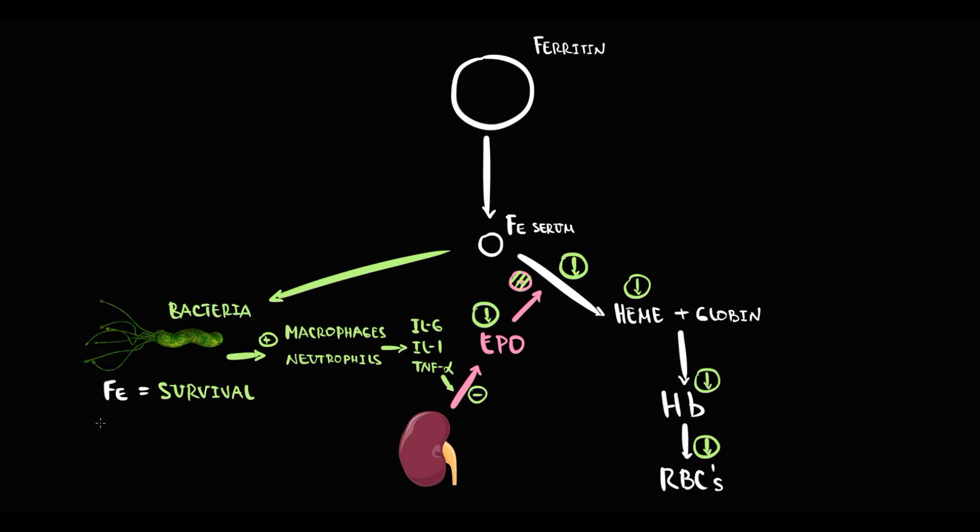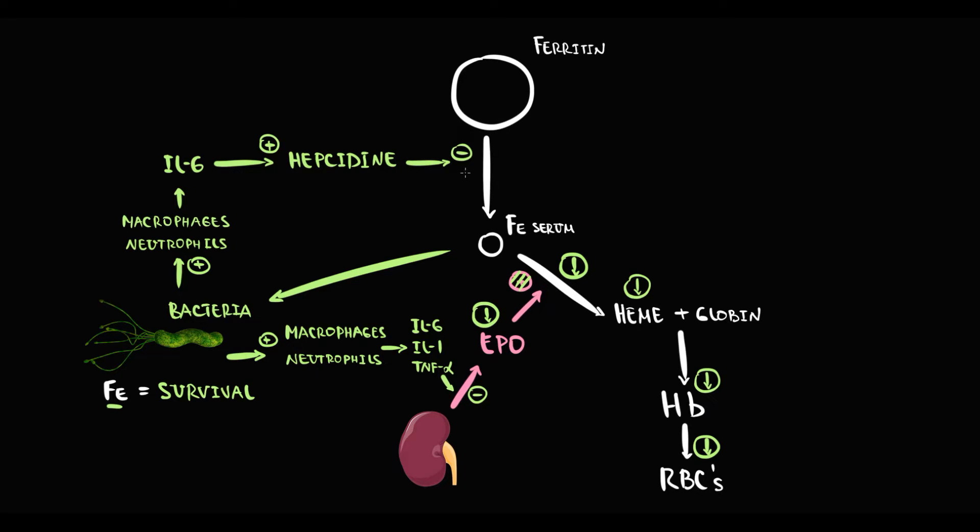Once bacteria appear in our organism, we need to get rid of them. Evolutionarily, the human organism developed a specific mechanism to kill bacteria. We know that bacteria desperately need iron—it's a matter of survival for them, so iron is a weak spot. It turns out that macrophages and neutrophils during inflammatory response secrete interleukin-6, and interleukin-6 induces production of a specific protein called hepcidin.